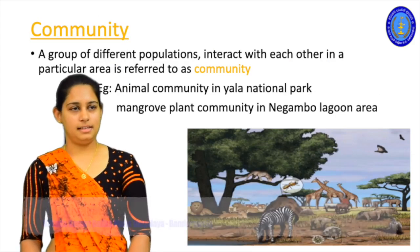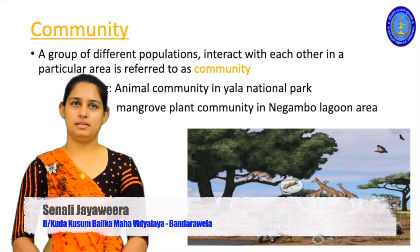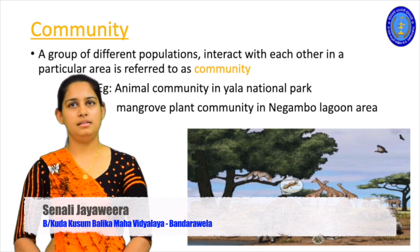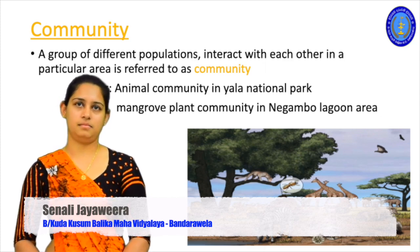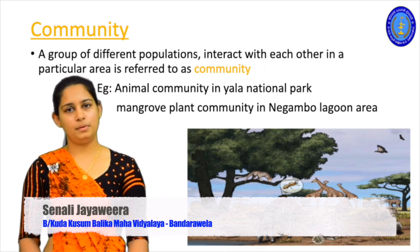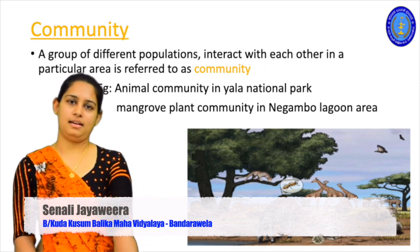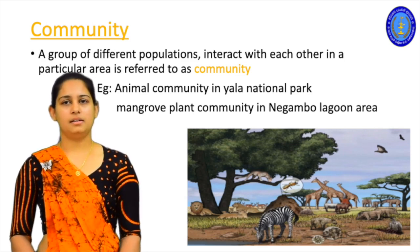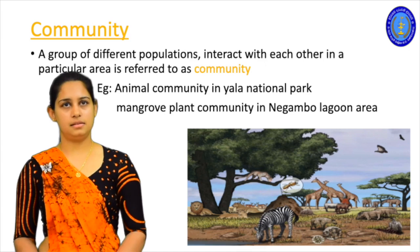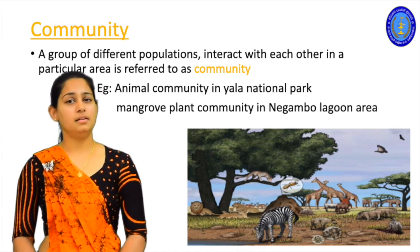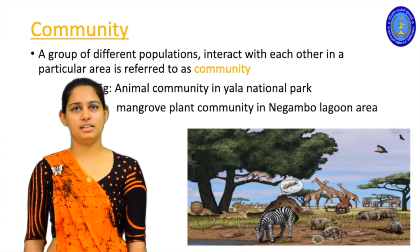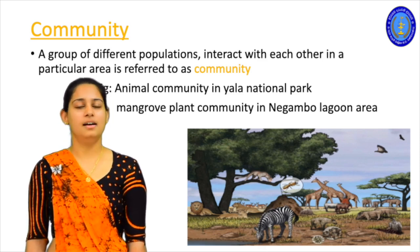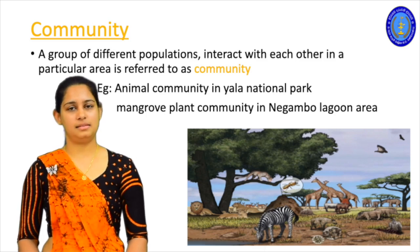The next organizational level is the community. Simply, a number of populations form a community. In a standard definition: a group of different populations that interact with each other in a particular area is referred to as a community. Different populations should live together. If we consider any forest or grassland, several populations live together and it becomes a community. Examples include the animal community in Yala National Park or the mangrove plant community in the Negombo Lagoon area.